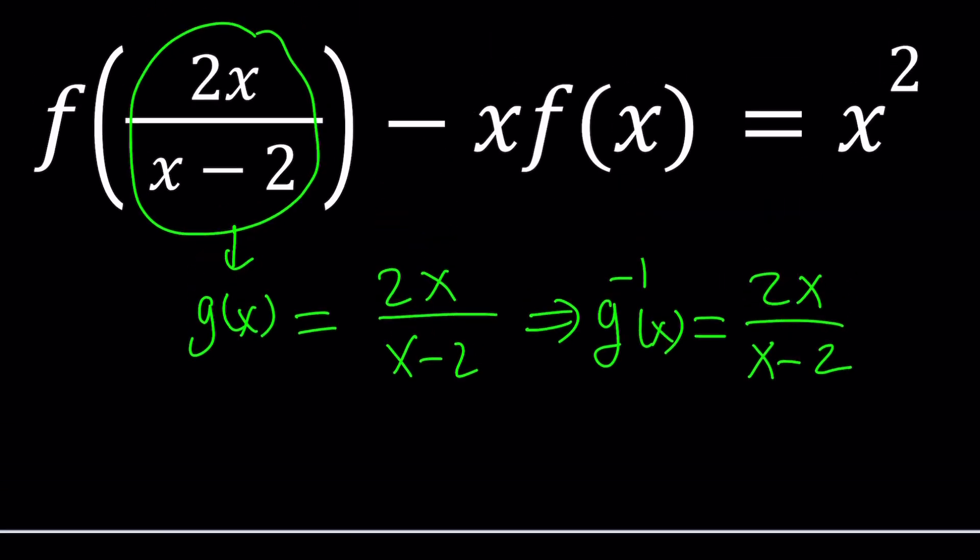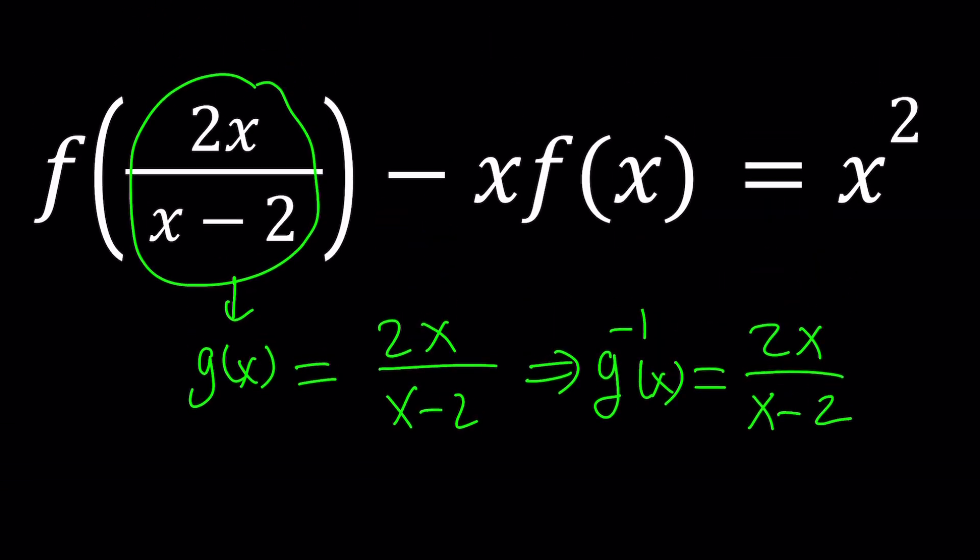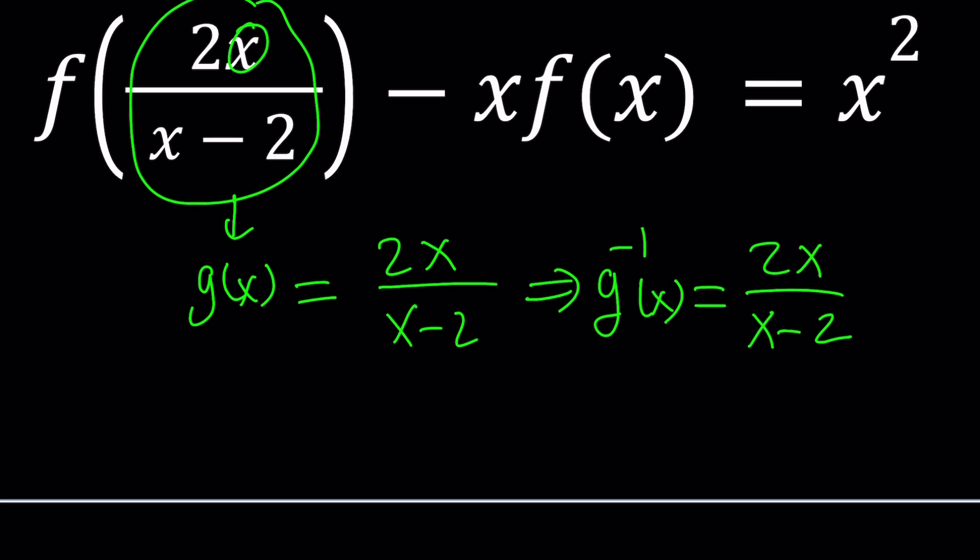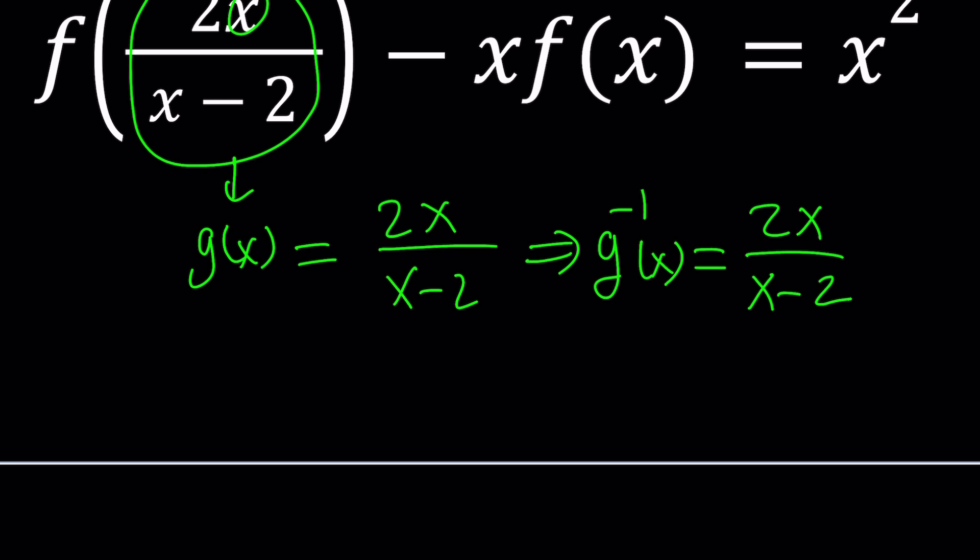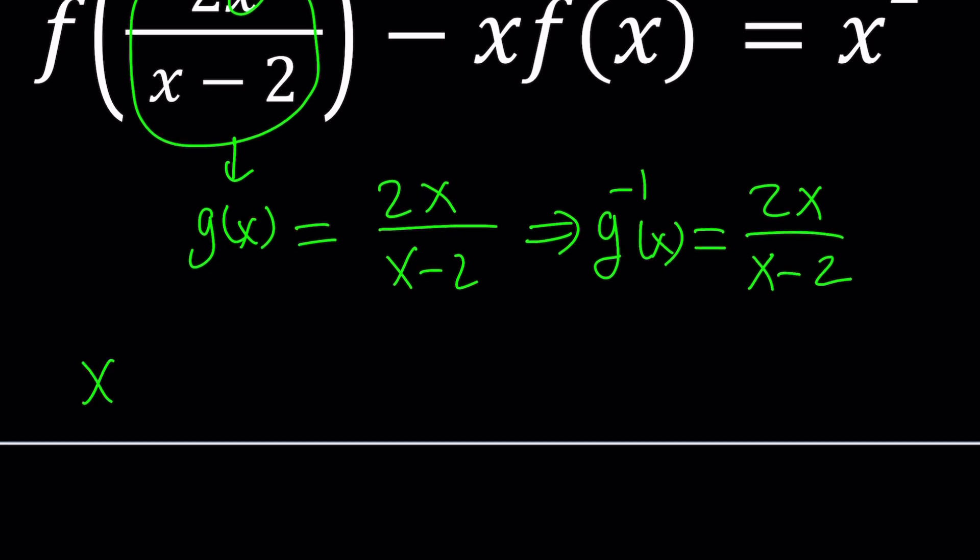So to keep a long story short, we're going to do the following. We're going to replace x with g of x. Make sense? So that's going to give us f of g of x, which is actually the identity. So we're going to see that in practice, so let's do that. x replaced with 2x over x minus 2.